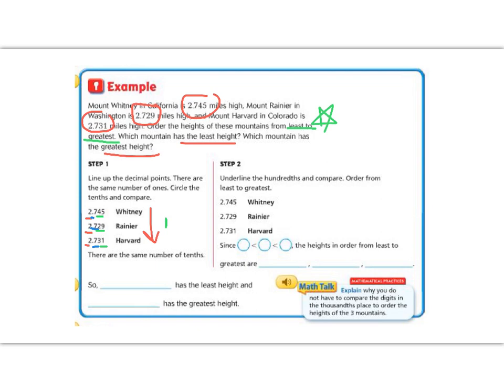And lastly, the largest number, 4, Whitney. We did this compared on the hundredths places, which is actually step 2, the hundredths. So we have 4, 2, and 3.